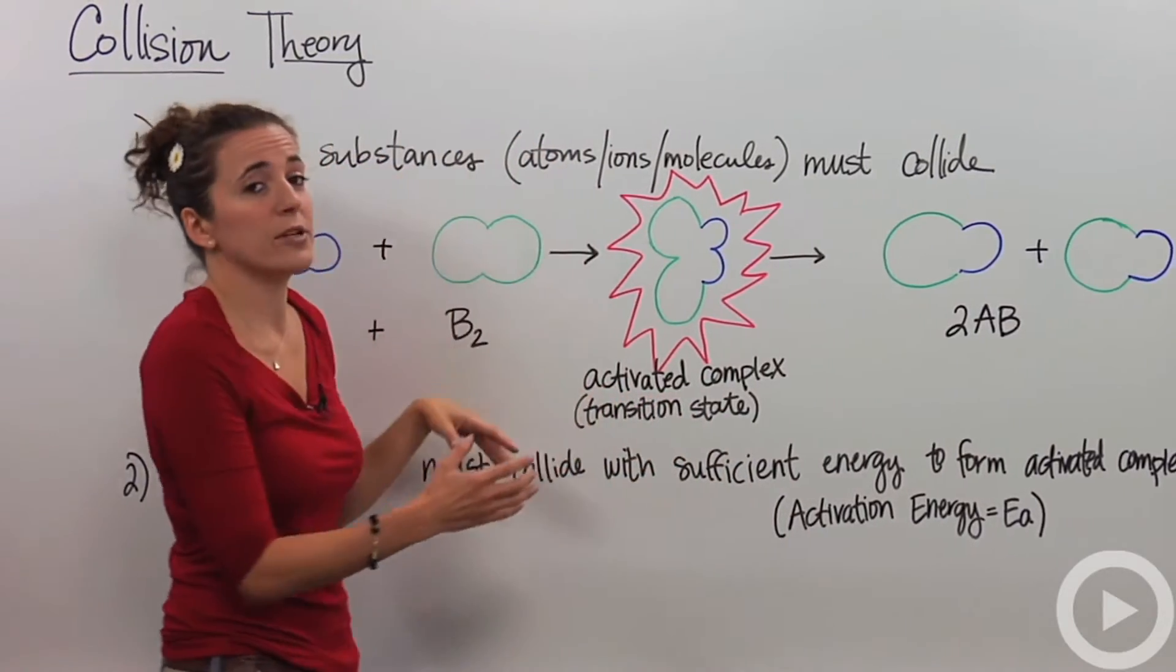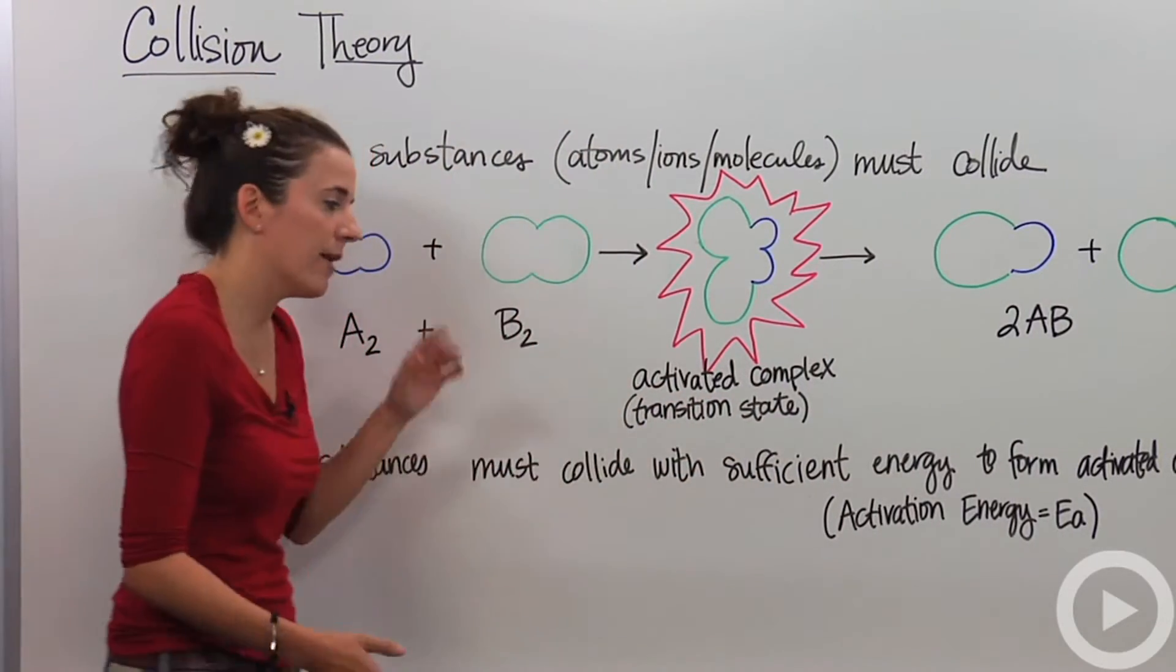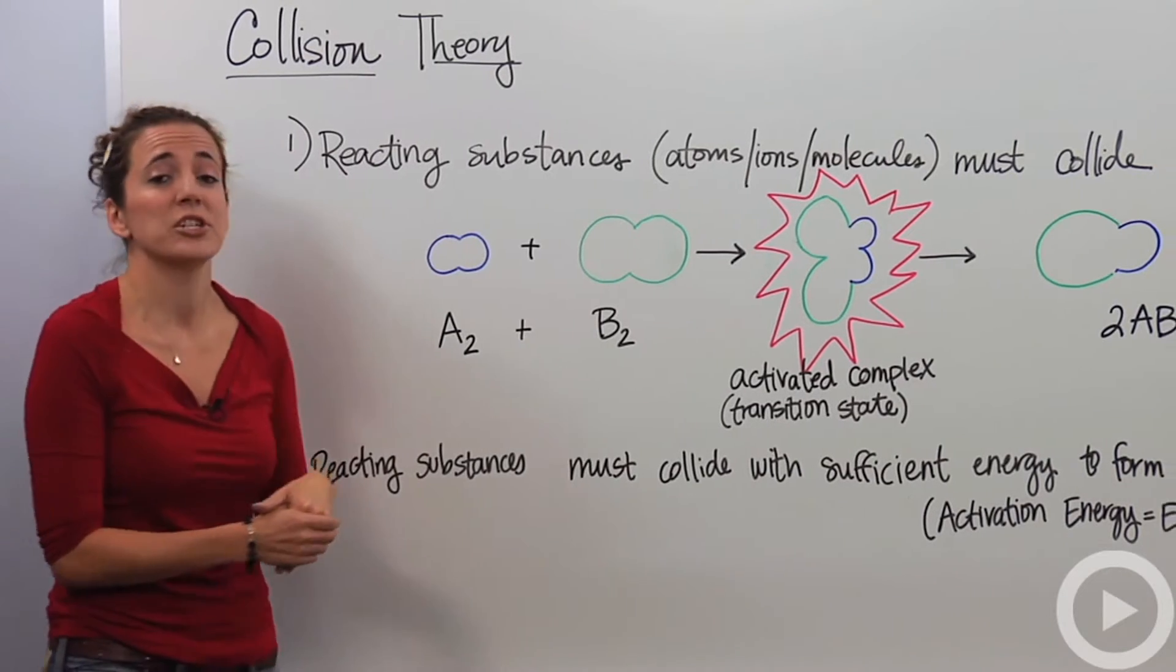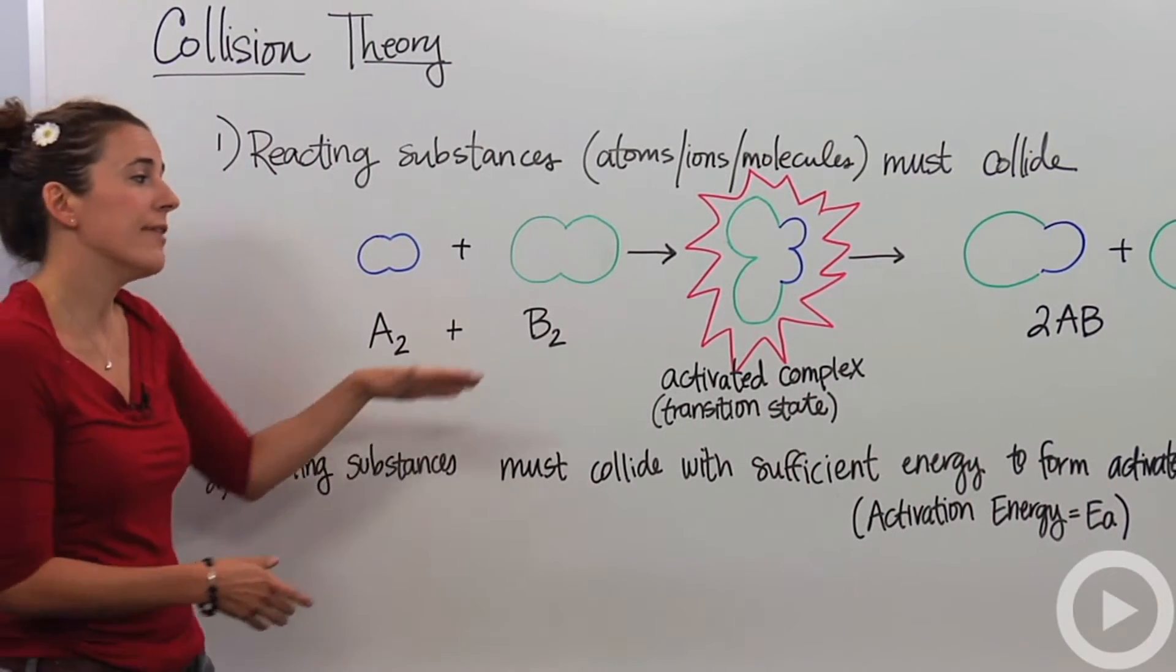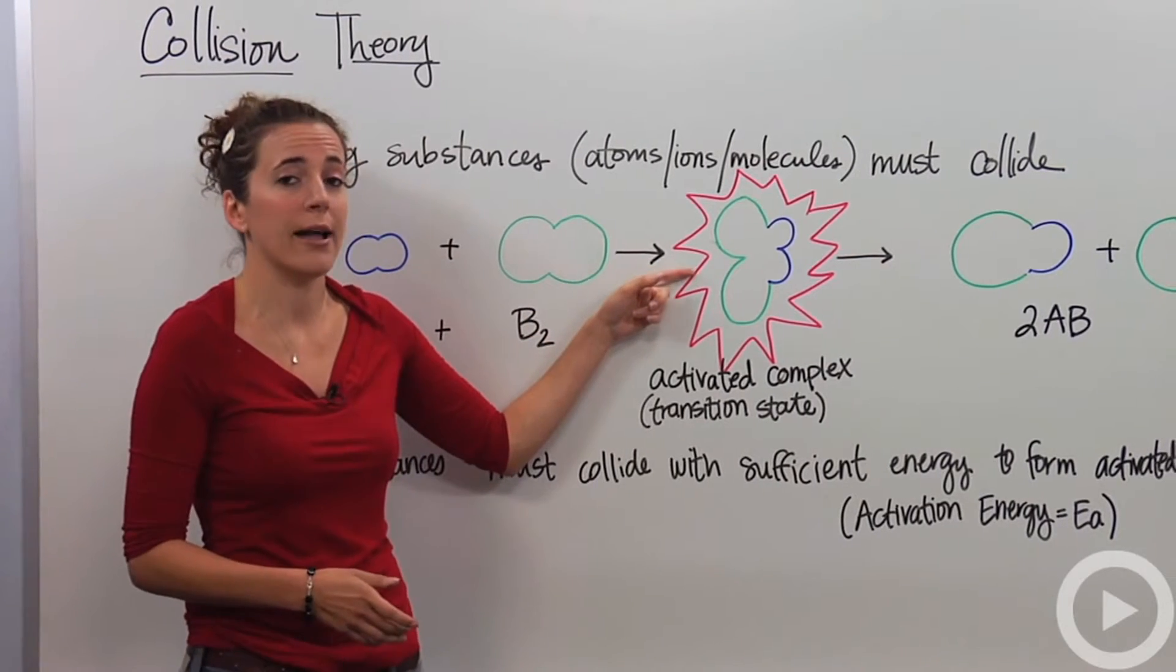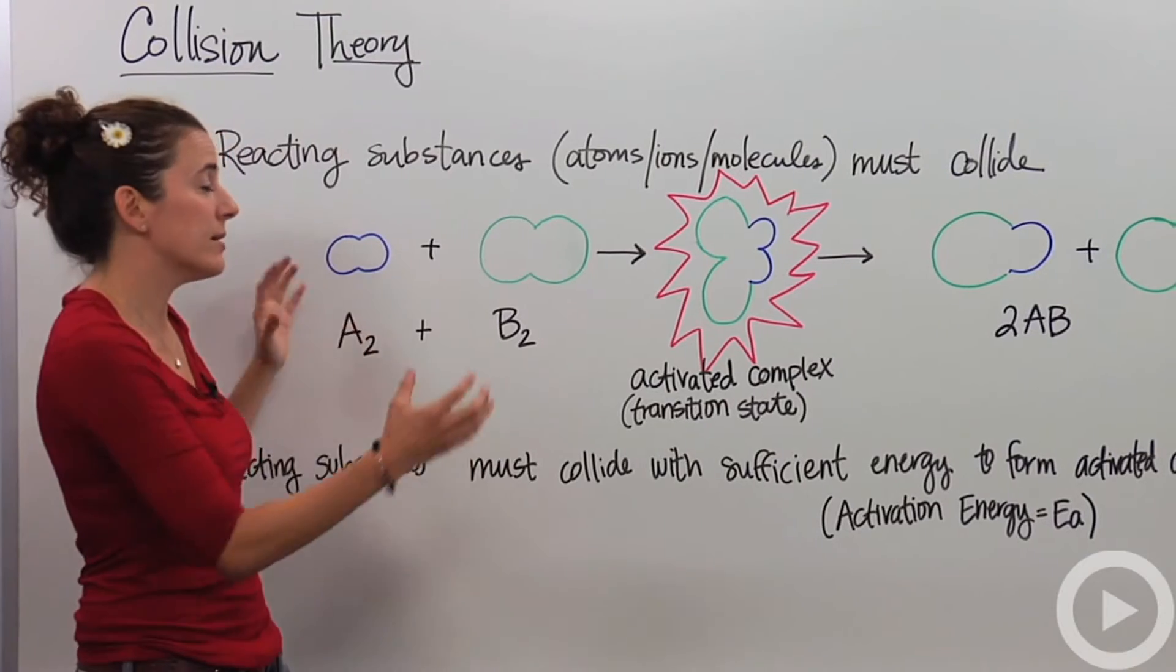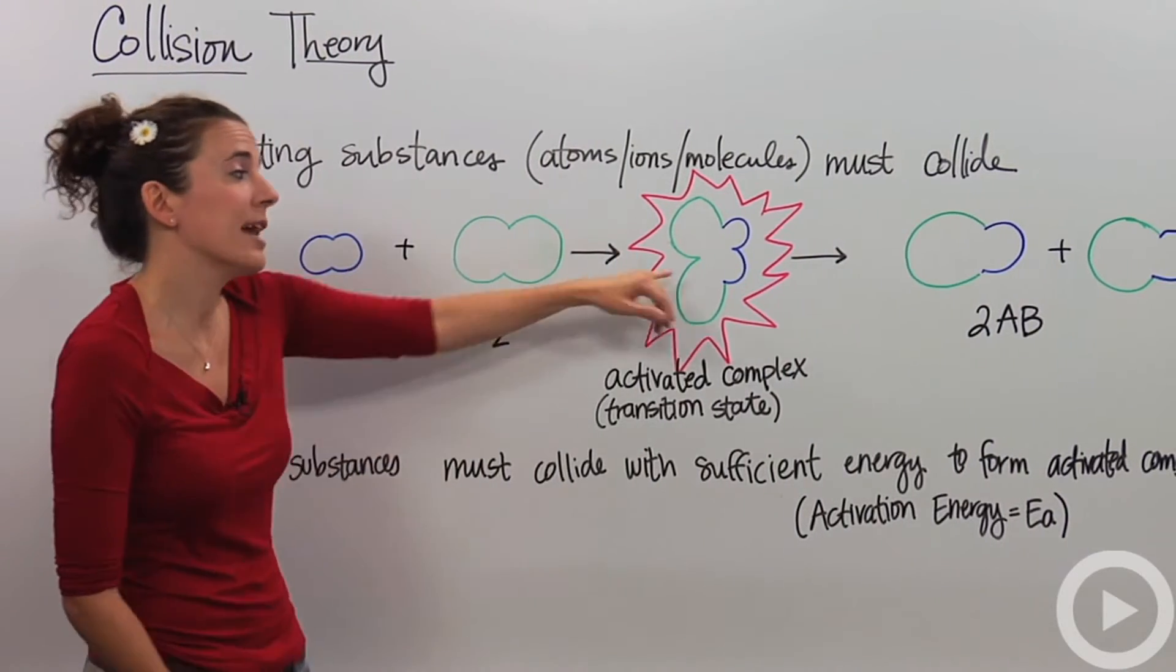So the first postulate is that they must come together. That's easy enough. The second one says the reactant substances must collide with sufficient energy in order to form that activated complex, because this activated complex is extremely high in energy, very unstable. So they must collide with a certain amount of energy to get to this point.